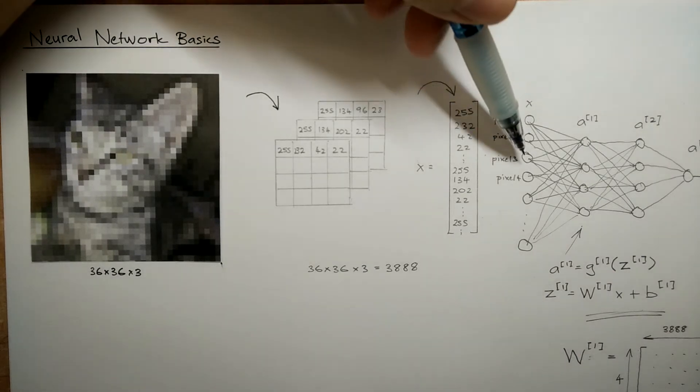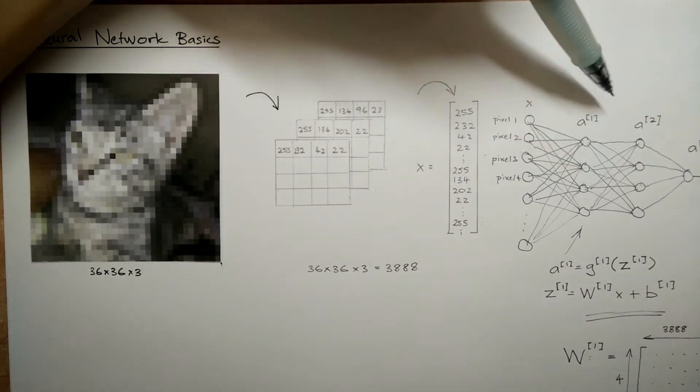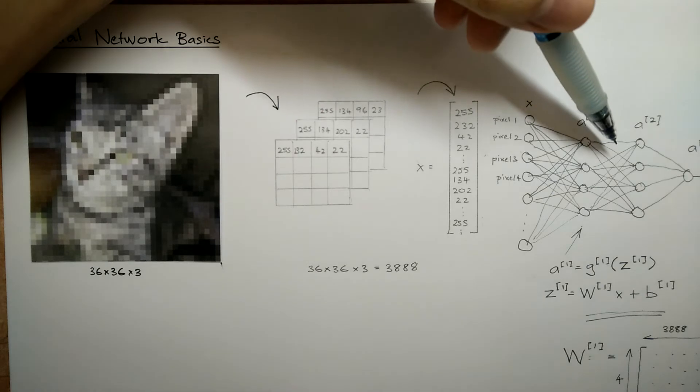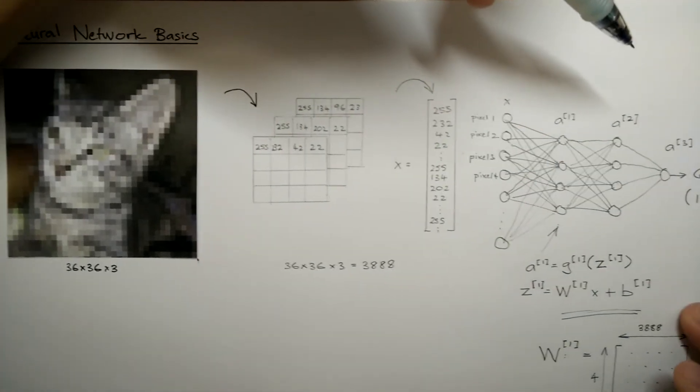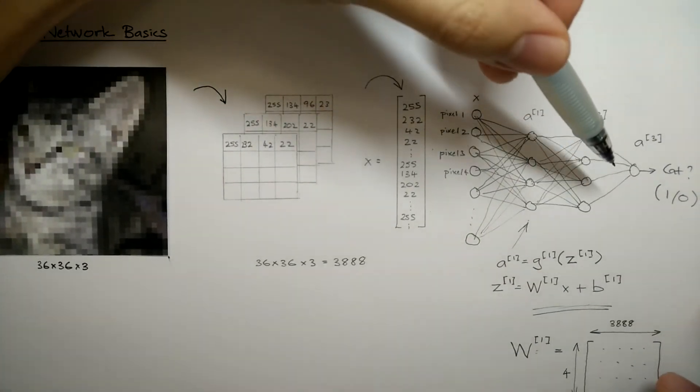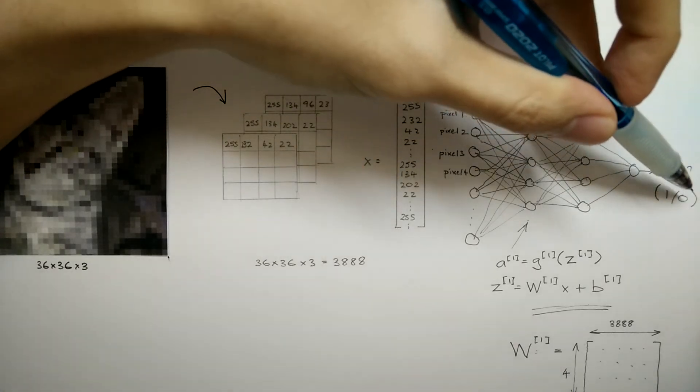From here, every pixel is connected to every neuron in the next layer, and every neuron in this layer is connected to every neuron in the next layer, until finally the last neuron outputs whether or not the image of a cat is one or zero.